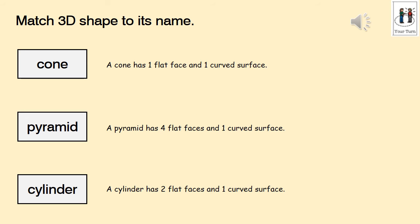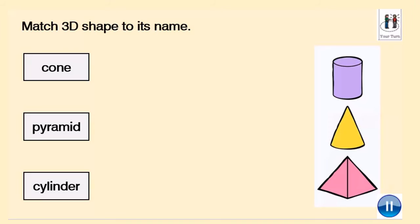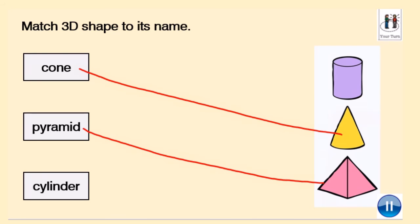A cone has one flat face and one curved surface. A pyramid has four flat faces and one curved surface. A cylinder has two flat faces and one curved surface. Match the 3D shape to its name. Pause the video whilst you work out which one's the cone, pyramid and the cylinder. Okay, ready to mark them. A cone. We have an upside down ice cream cone. A pyramid and a cylinder.